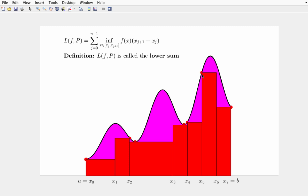And, as you can see, this particular lower sum for this particular partition is less than the actual integral. And, of course, the lower sum is always less than or equal to the integral if the integral exists. And, in particular, the lower sum for a particular function and partition is always less than or equal to the upper sum.